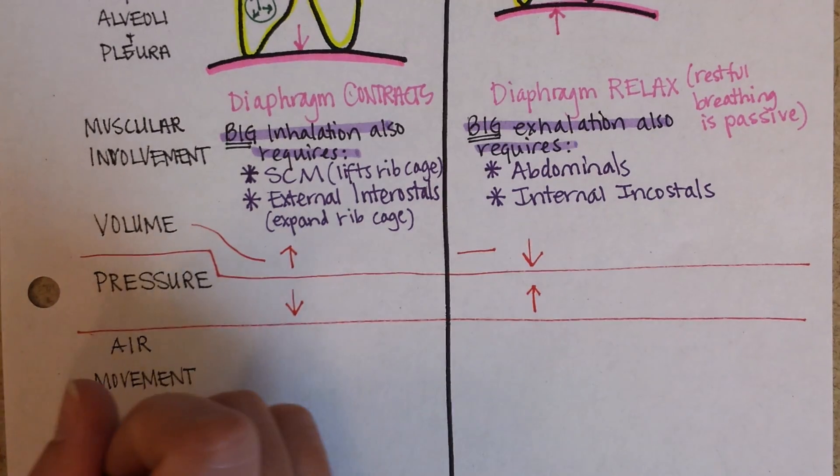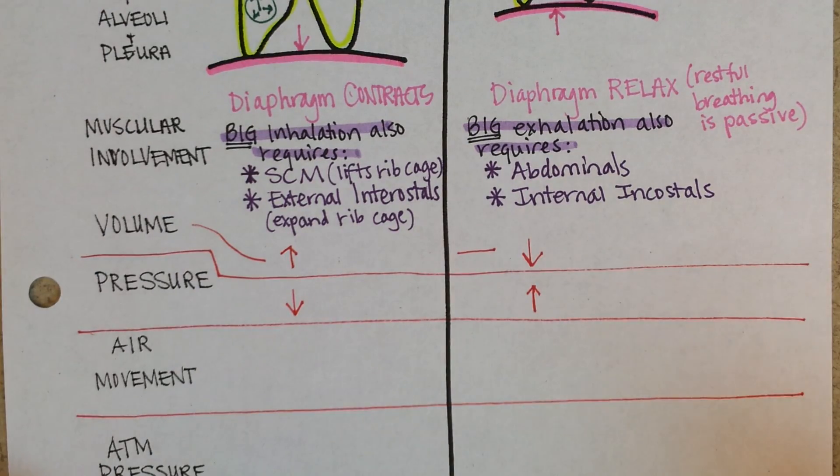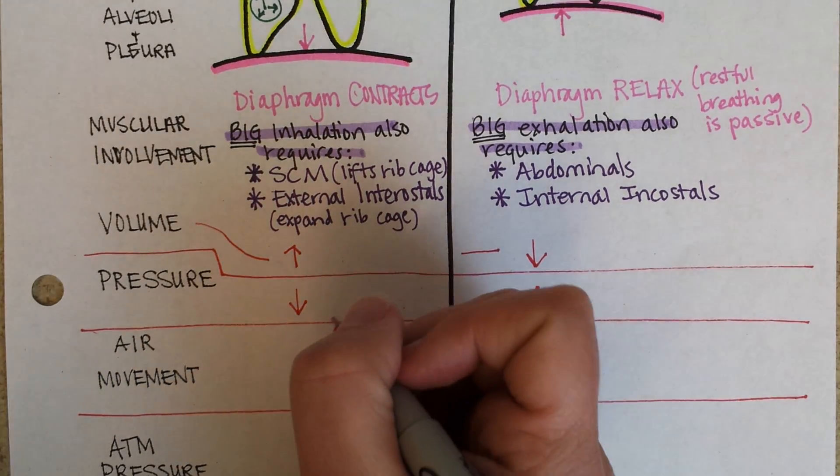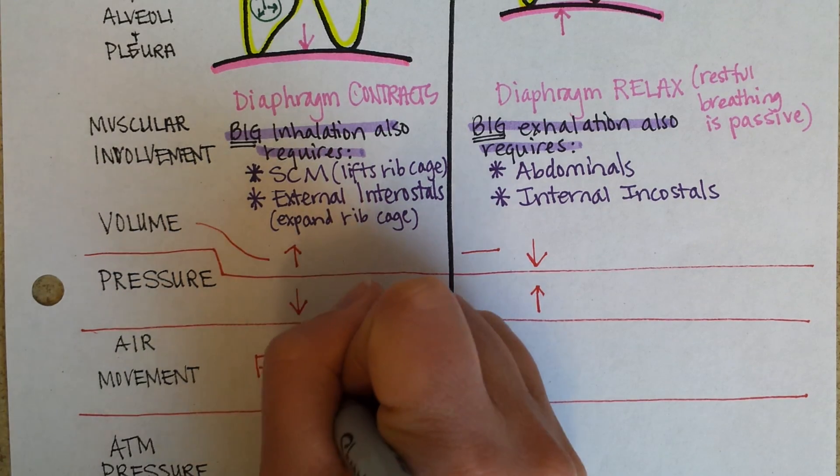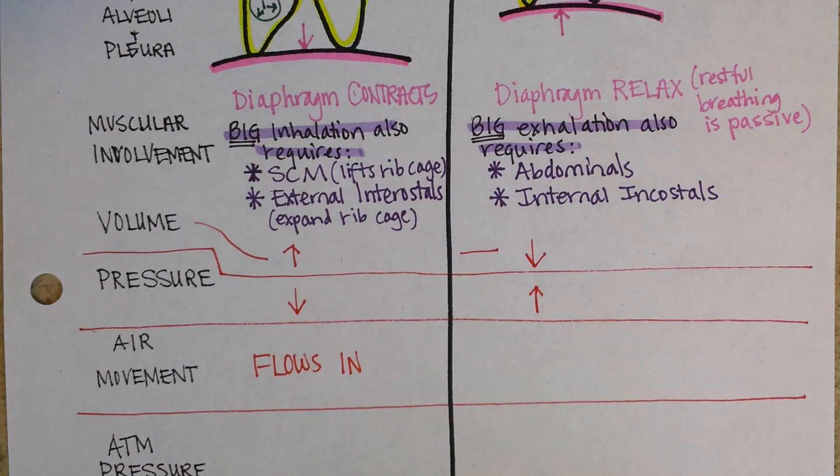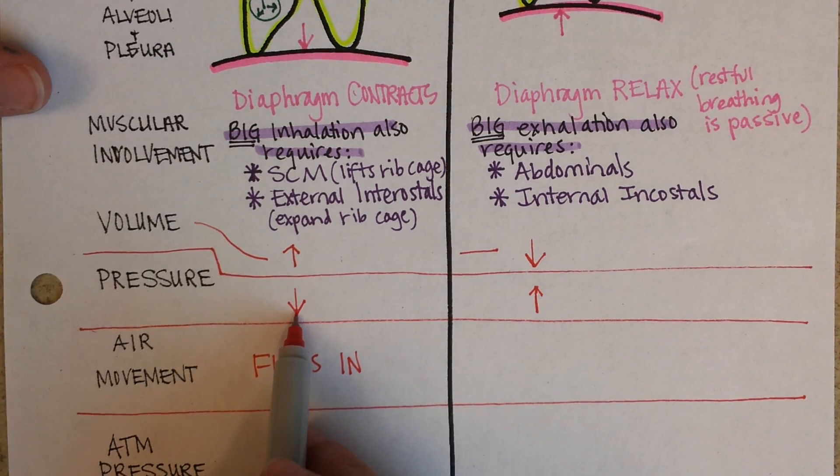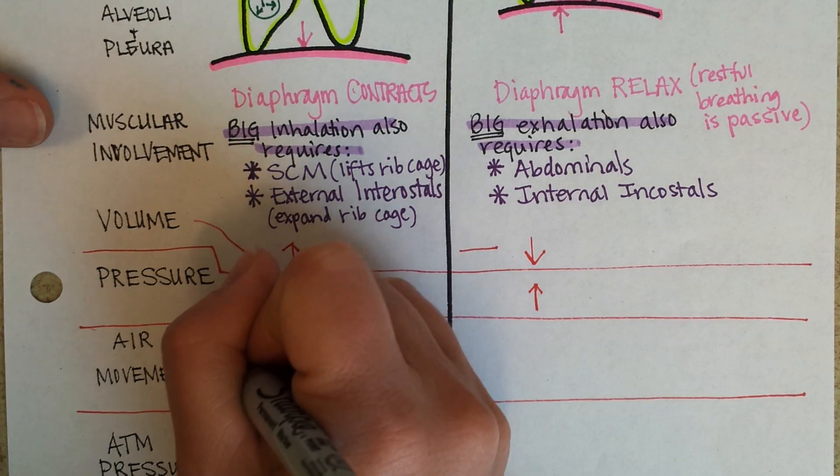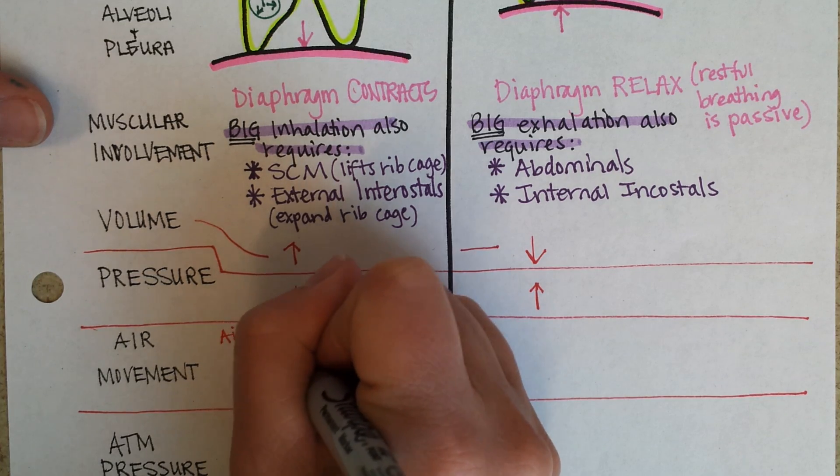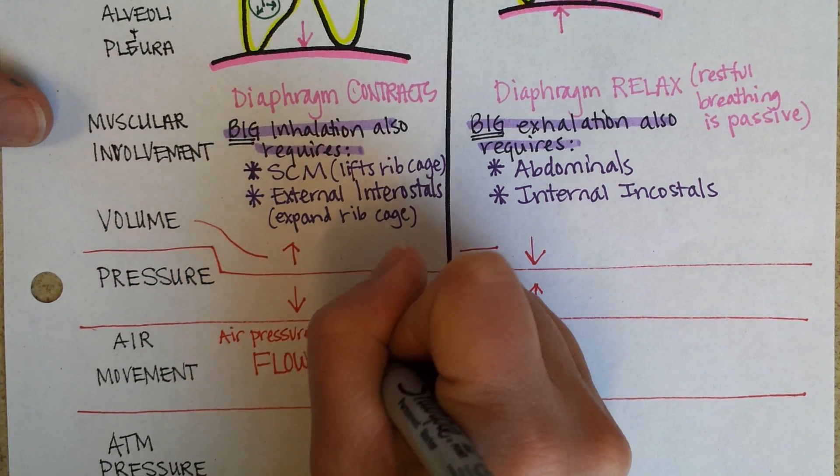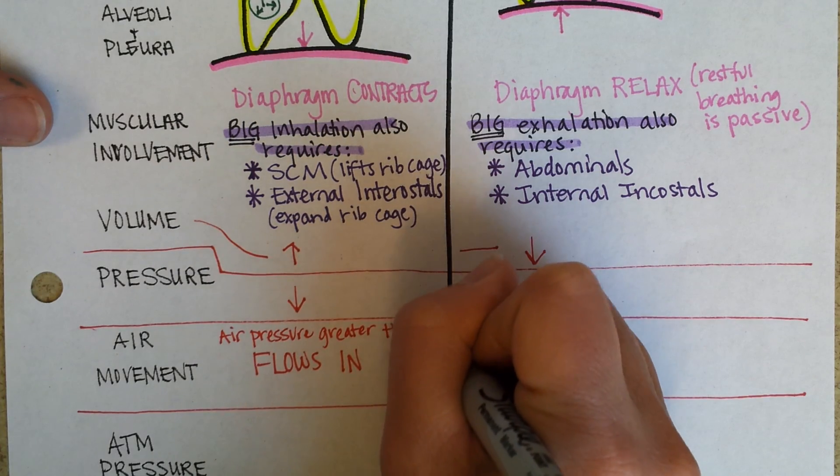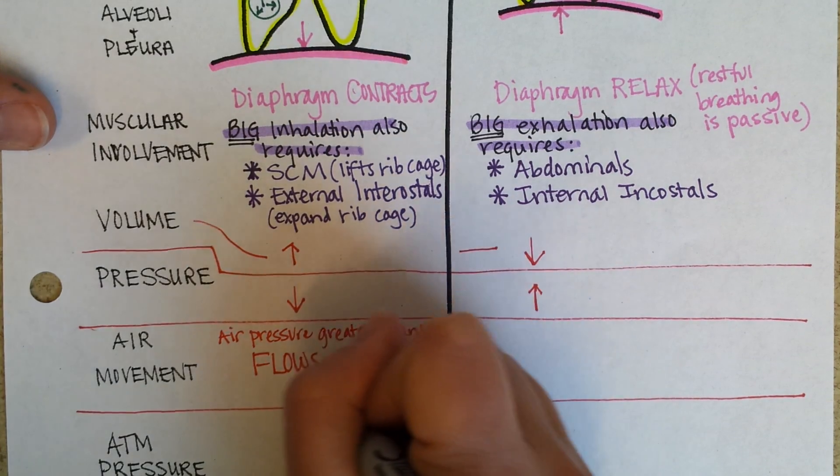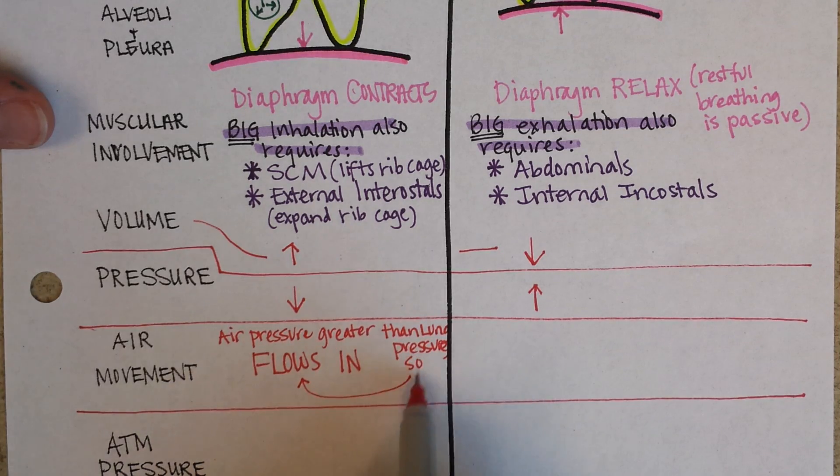And then what happens is that if you don't have very much pressure inside your lungs, then air flows in. You can understand this if you figure, okay, pressure in the lungs is less than outside of the body. So air pressure is greater than lung pressure, so air flows in.